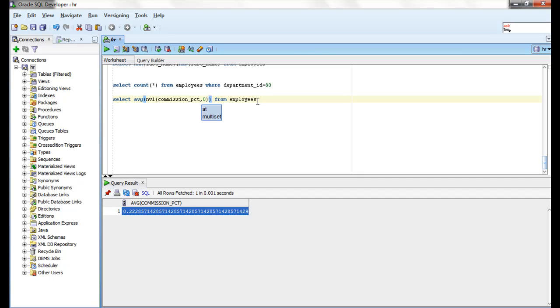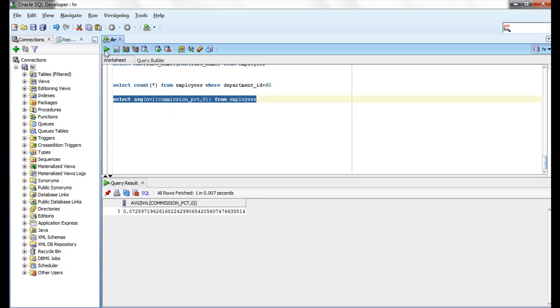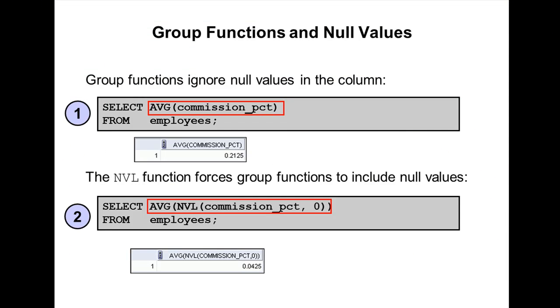When we use NVL, we are getting 0.027272, which is the correct actual average. This is the correct actual average.